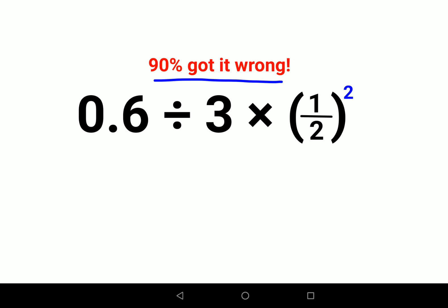First thing, whenever we have a decimal, especially in these kind of scenarios, it's better to convert it into a fraction. So now we have 0.6, you can write this as 6 upon 10. So this looks like this now, this is 6 upon 10.